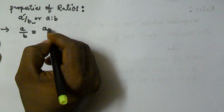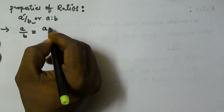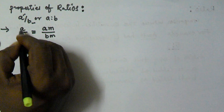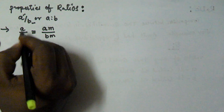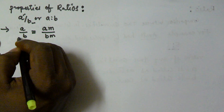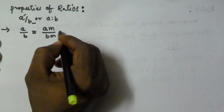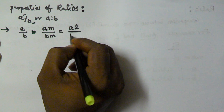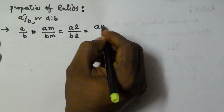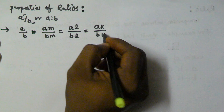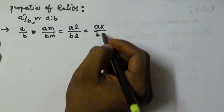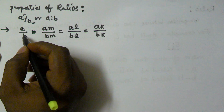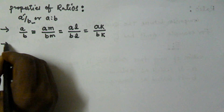For example, you are multiplying both the numerator and denominator by m, giving a·m and b·m. So the value of the ratio is not going to be changed. Here I am also multiplying with l, and with k — numerator and denominator. The value of the ratio is never going to be changed if you multiply numerator and denominator by the same value.